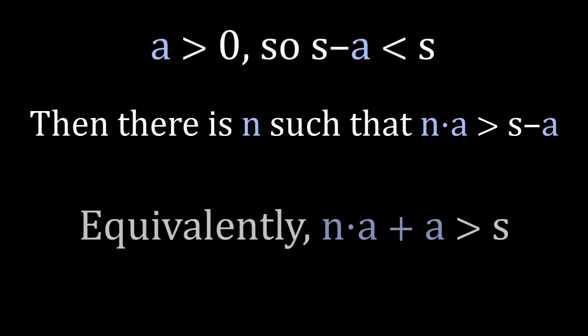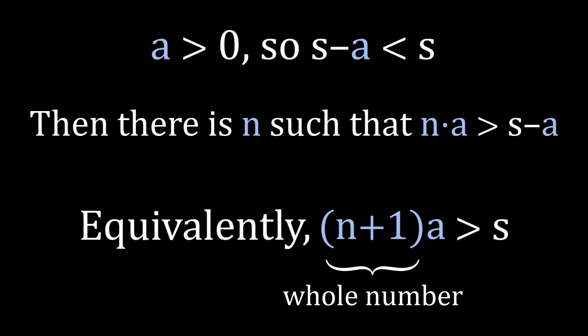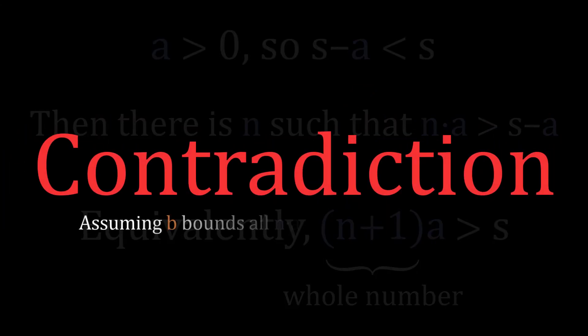Then also NA plus A is greater than S, which we can rewrite as N plus 1 times A is greater than S. But N plus 1 should be a whole number since the original N was. So there's a contradiction here. Thus, the original claim has been proven true.